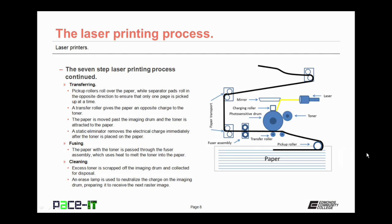The last step in the process is the cleaning process. Excess toner is scraped off of the imaging drum and collected for disposal. An erase lamp is also used to neutralize any remaining charge on the imaging drum, preparing it to receive the next raster image. In some manuals, you may see the cleaning process being listed as the first process. First or last, it doesn't really matter as long as everything flows in order.